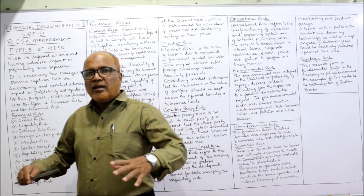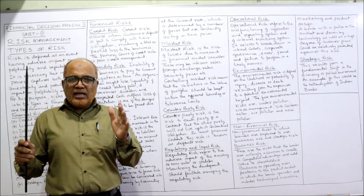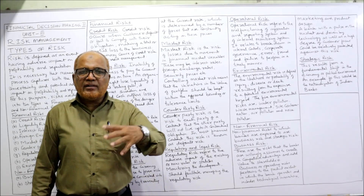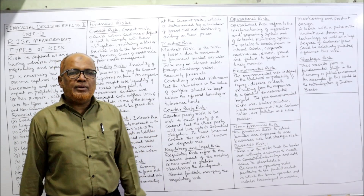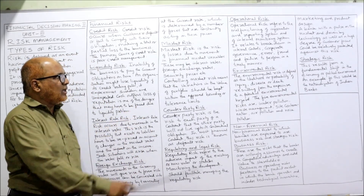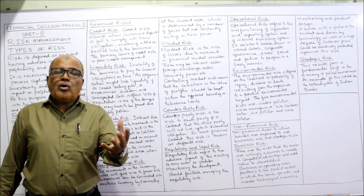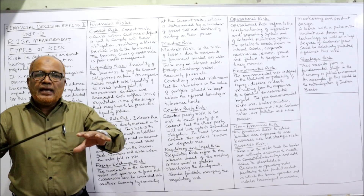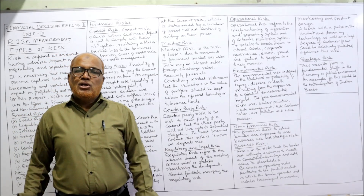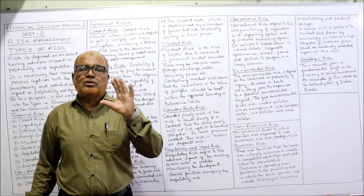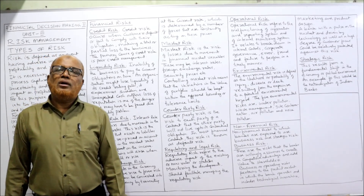Next is market risk. In the market, there are many financial variables, and changes in those variables will affect the business's profitability and reputation. The market financial variables include interest rates, foreign exchange rates, and security prices. To control market risk, the business must set a boundary — a limit on how much risk it can take. It should not go beyond this limit. A portfolio is made so that risk stays within a fixed boundary.